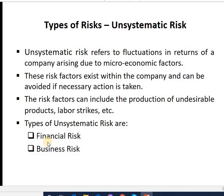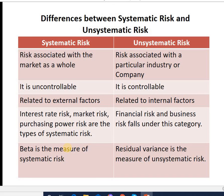Types of unsystematic risk include financial risk and business risk. Financial risk involves faulty decisions in raising finance — such as issues with cost of capital, raising debentures, or equity shares; any capital or finance management risk is called financial risk. Business risk is related to product failure and bad marketing strategies.